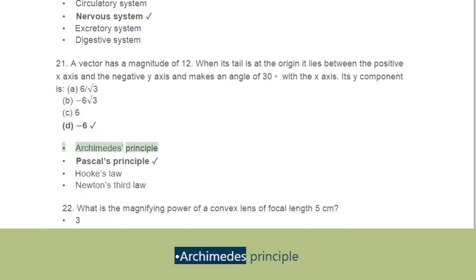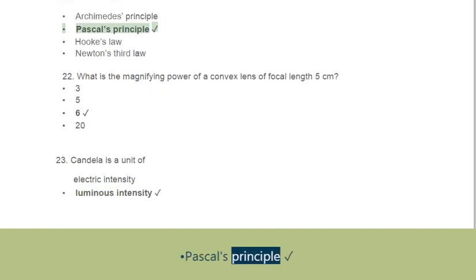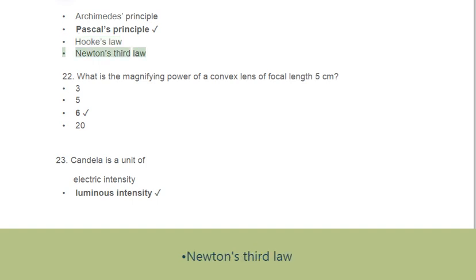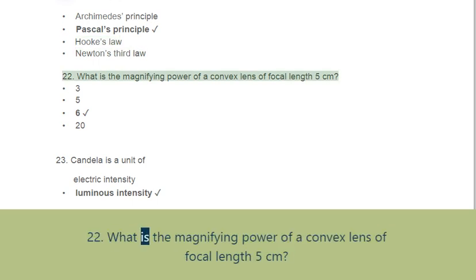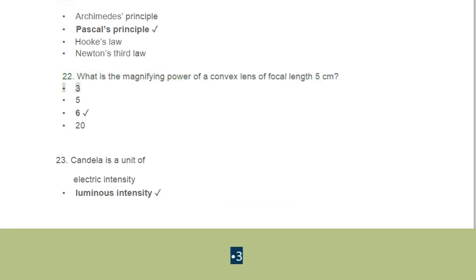Question 21 options reference principles including Archimedes' principle, Pascal's principle, Hooke's law, Newton's third law. Question 22: What is the magnifying power of a convex lens of focal length 5 cm? Options: 3, 5, 6, 20.